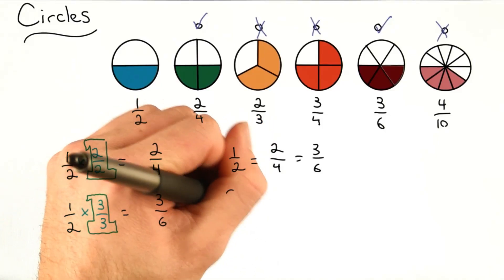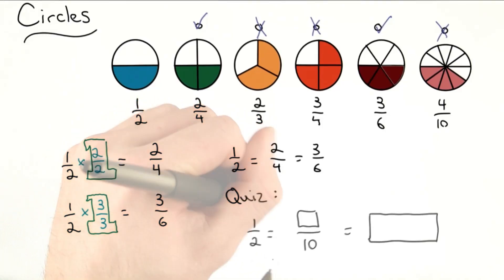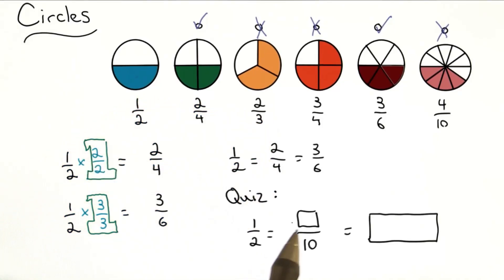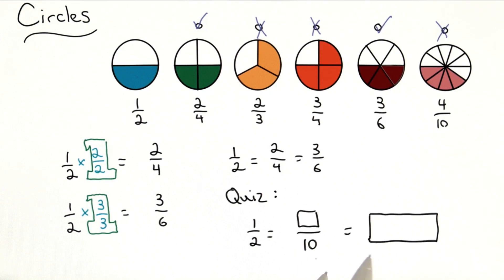So let's put all this together with a little quiz. What would the numerator have been for 1 half to be 1 tenth? And also,